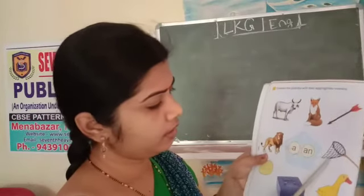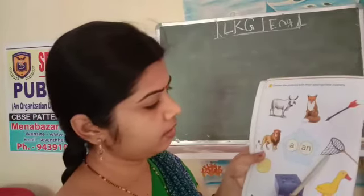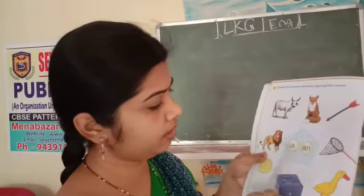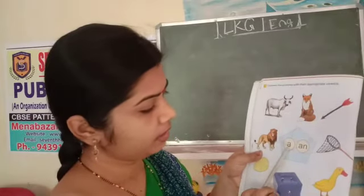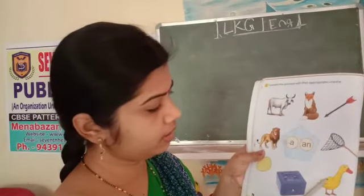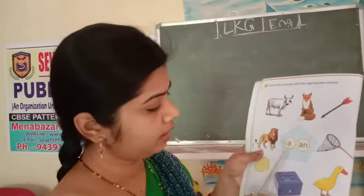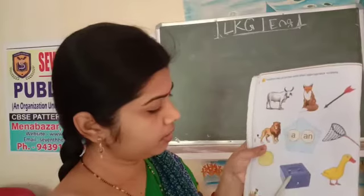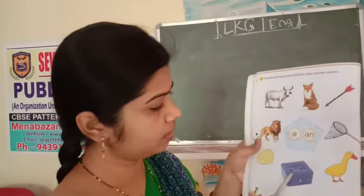A net — it is consonant. A dock — it is consonant. A box — it is consonant.